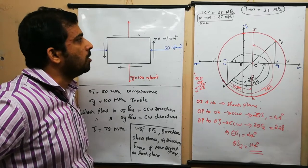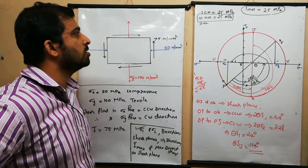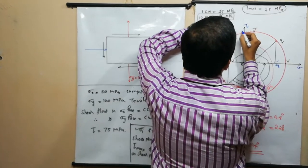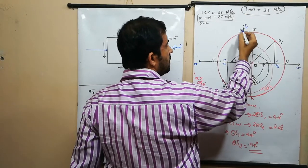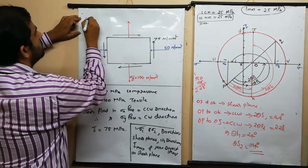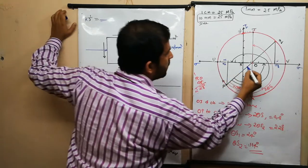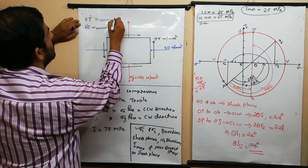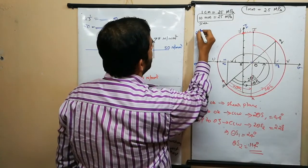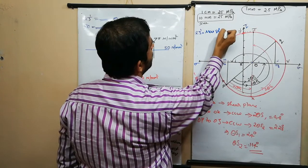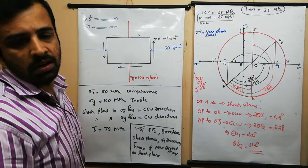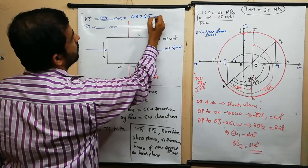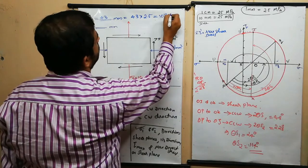Now we can determine the maximum shear stress and maximum direct stress on the shear plane. Considering shear plane OJ, the corresponding point on the shear axis is J-dash. Measuring distance R to J-dash gives 43 mm. On conversion: 43 multiplied by 2.5 gives maximum shear stress equals 107.5 mega Pascal.